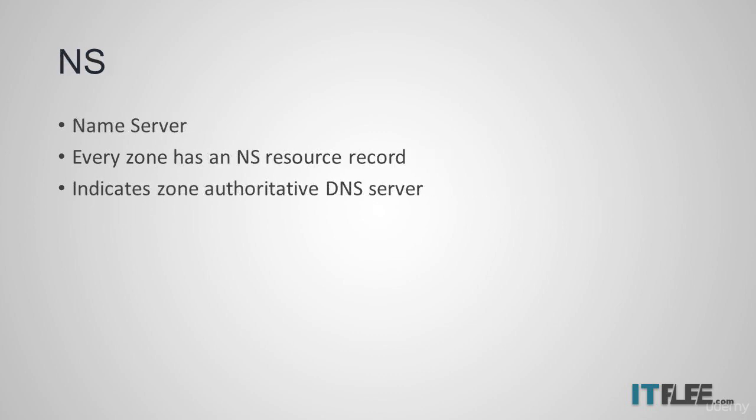The next resource record is an NS, or Nameserver, resource record. The NS record indicates the zone's authoritative DNS servers. Every zone must contain at least one NS record at the root of the zone.